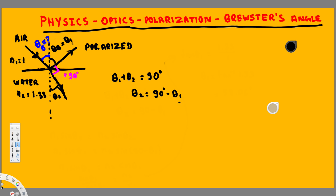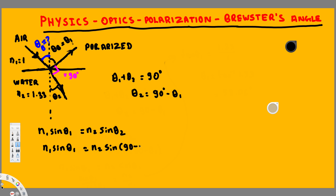This is useful because we can apply it in Snell's law and express everything in terms of theta 1. Snell's law is n1 sine theta 1 equals n2 sine theta 2. Instead of theta 2, we plug in 90 minus theta 1. And since sine of (90 minus theta 1) equals cosine theta 1, we get n1 sine theta 1 equals n2 cosine theta 1.